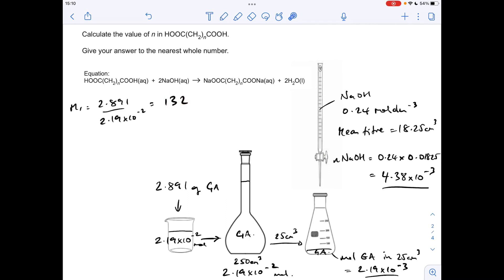So now we need to take off the mass of the bits we know, so the two COOH groups, so they have a combined MR of 90. So that means the CH2N part of the formula has an MR of 42. So how many 14s go into 42? 3. So N equals 3.